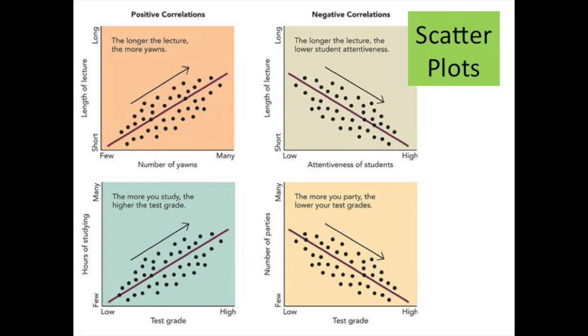Below that, there is another example of positive correlation, this time with hours of studying and test grade. Once again, you can reverse it. The fewer hours that you study, the lower the test grade. So decreasing, decreasing, or increasing, increasing, this is what makes a positive correlation.